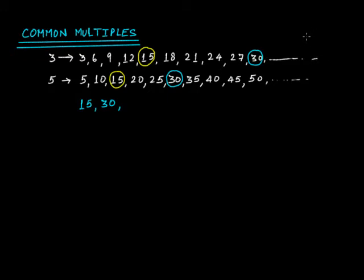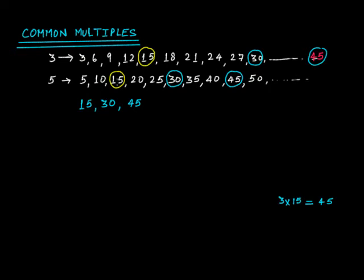If you continue writing the multiples of 3, at some point you get 3 times 15, which is 45. So the next common multiple of 3 and 5 will be 45. Similarly, we can find as many common multiples as we want. So the common multiples of 3 and 5 are 15, 30, and 45 — because 15, 30, and 45 are each multiples of both 3 and 5.